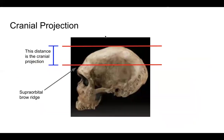To measure cranial projection, we use a side view of the skull. We measure the distance between the top of the skull and the top of the supraorbital brow ridge — that's kind of the top of your eyebrows, the quintessential characteristic of Neanderthal skulls. You can measure the surface distance between these two points, and this gives you your cranial projection. A larger cranial projection generally means a larger frontal lobe and therefore better problem-solving ability.